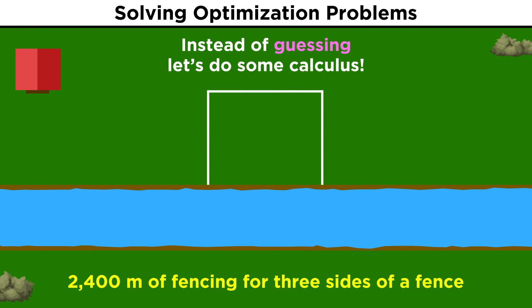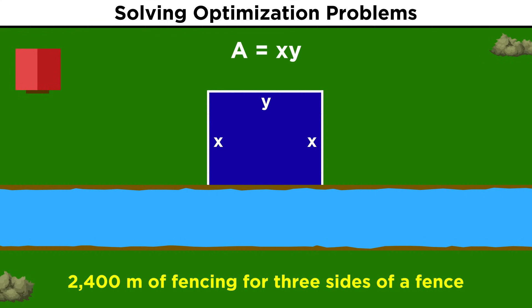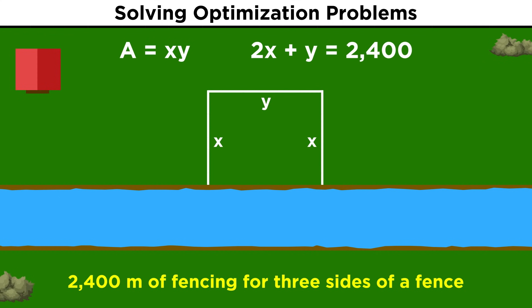Well, first, let's assign some variables. Let's call these two sides x, and this side y. We care about this area, and since this is a rectangle, area equals x times y. We also know that these three sides must add up to twenty-four hundred, because that's all the fencing we have to work with. So let's say that 2x + y equals twenty-four hundred.